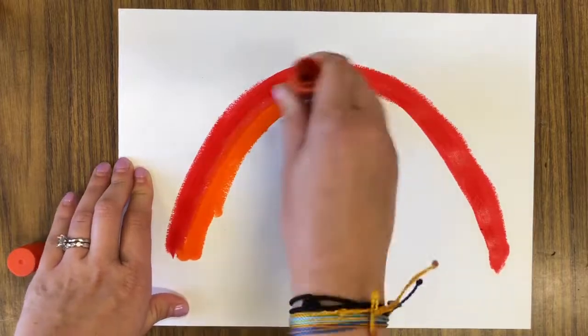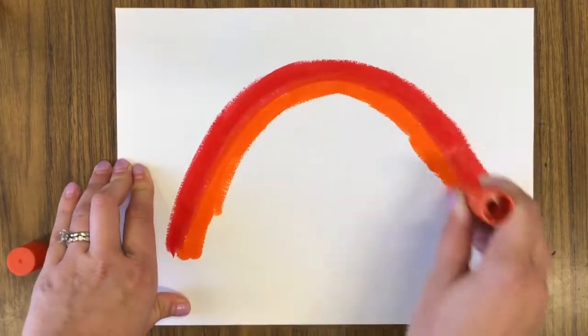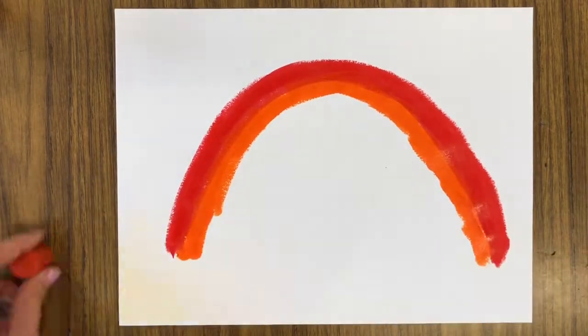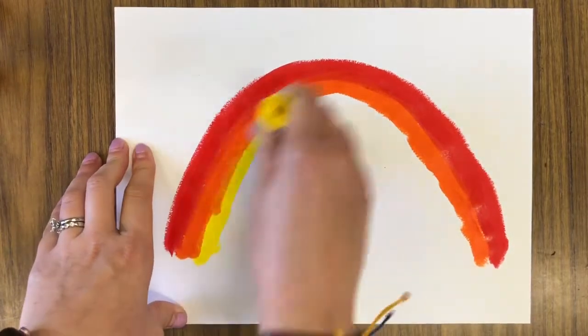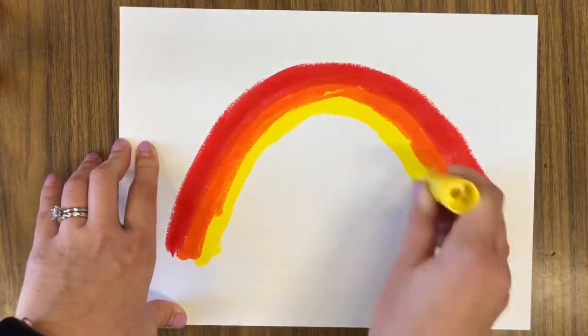Under the red line you can add an orange line. It is a good idea to have your colors overlap just a little meaning they can touch each other. A real rainbow never has white spaces in between the colors.